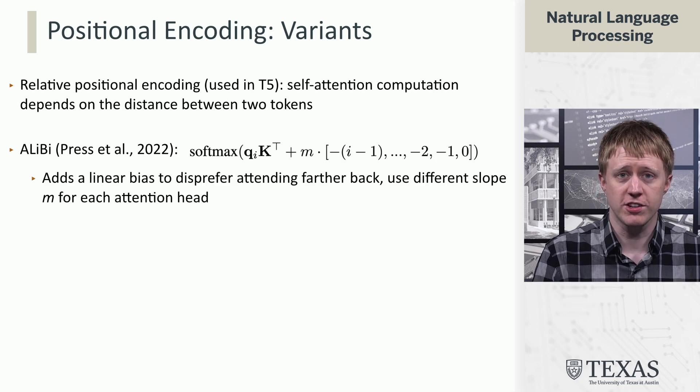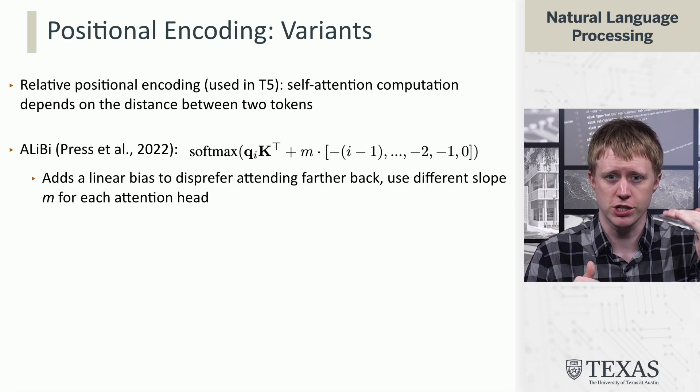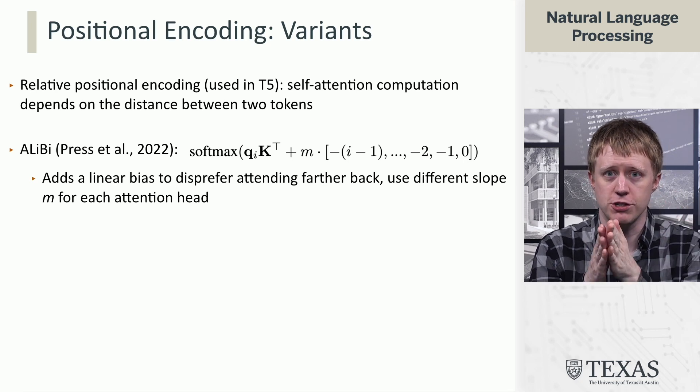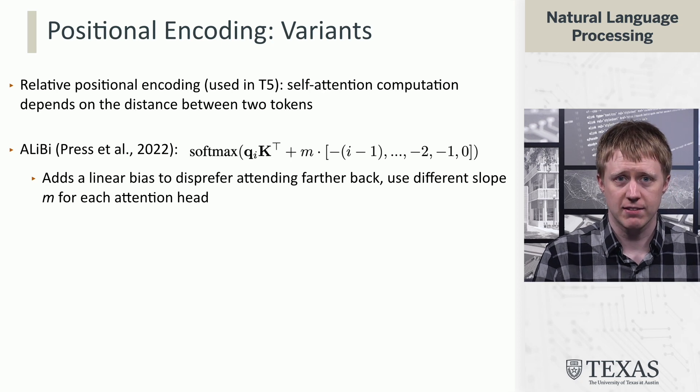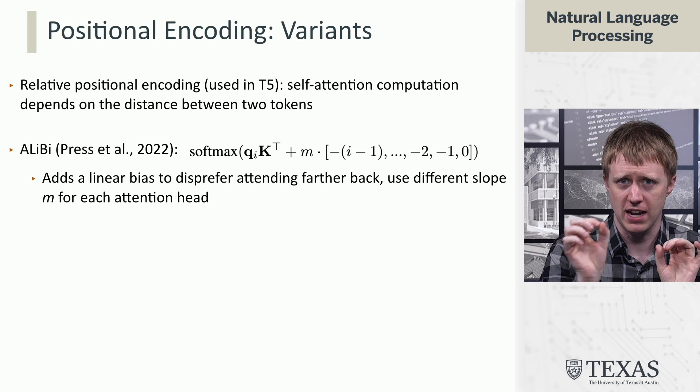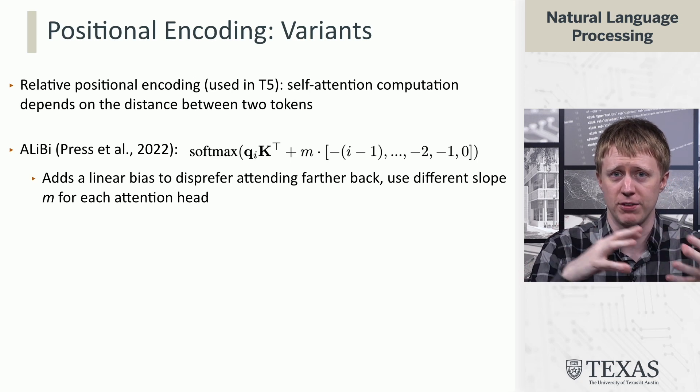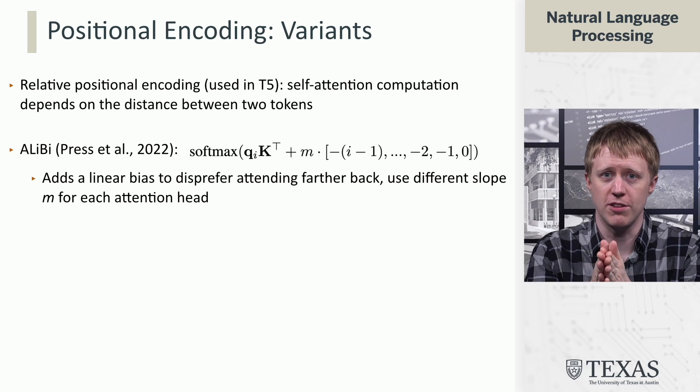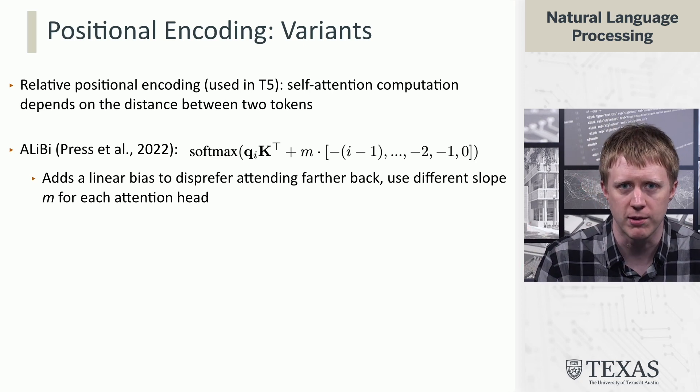And this is just going to dis-prefer attending to things that are farther and farther back. It's kind of pushing down the self-attention weight by M for each token that you go further back in the sequence. And as a kind of key thing here, they take each attention head and they give each attention head in the model a different value of M. So the different heads of self-attention will learn to either prefer things that are closer by or be a little more uniform over the whole sequence.